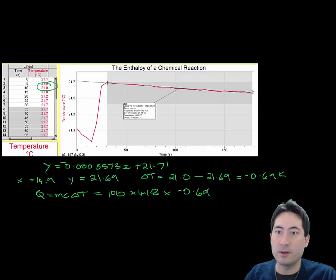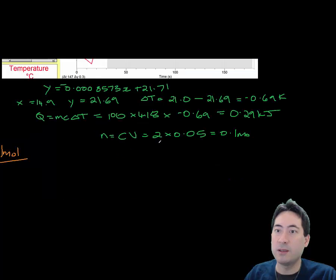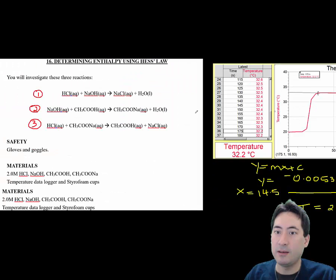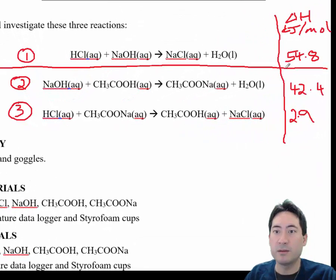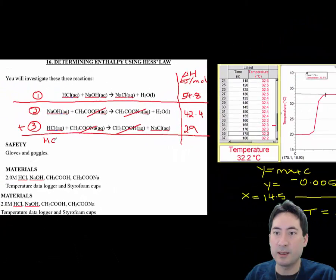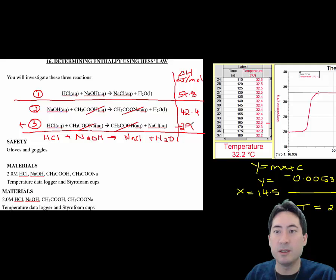Once we've got those three values down, we'll write them down over here. The practical asks us to compare two and three, so we add two and three together. They cancel out and equal the same as one. Now we can add the enthalpies together and we get 45.3.